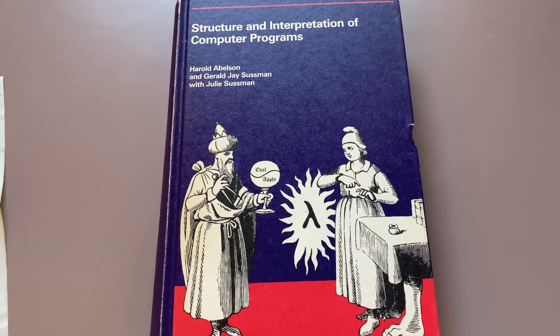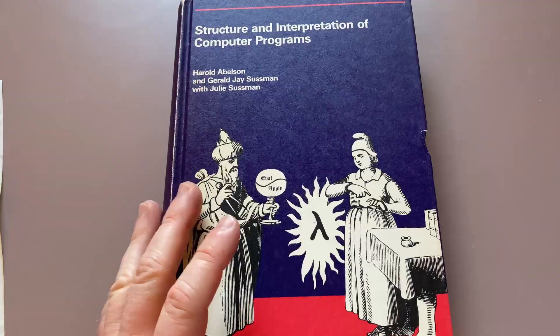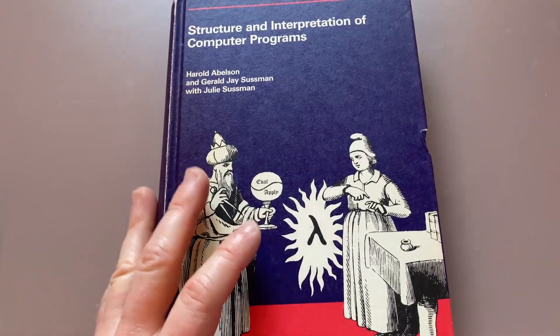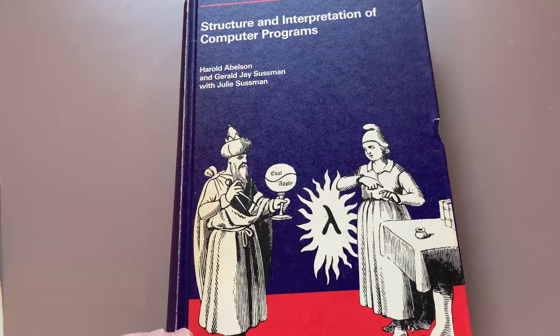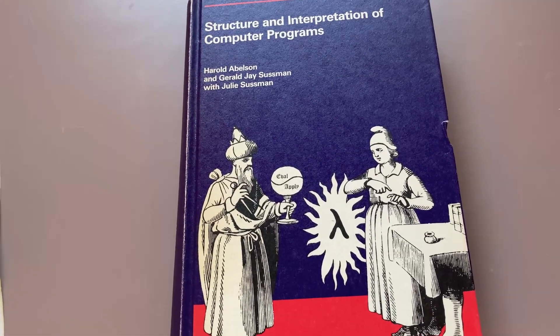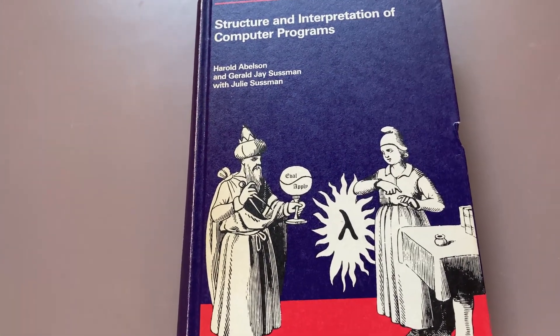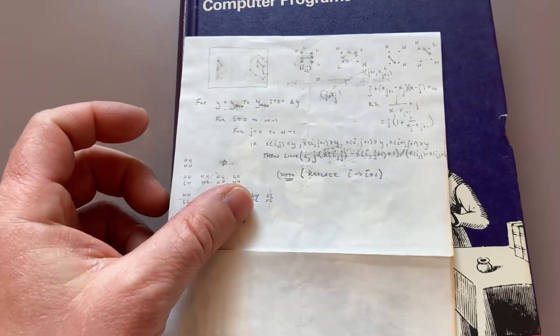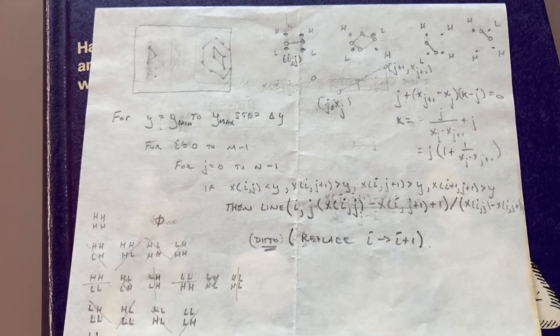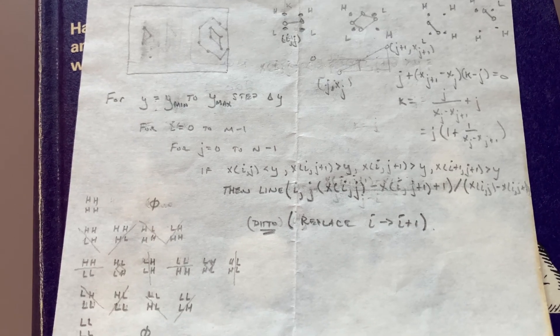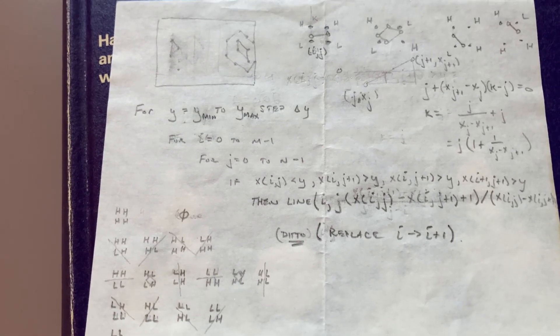The previous owner of my copy of this book actually signed this book and stamped it, but I purposely omitted it from this video because I wanted to respect his privacy. I'm pretty sure he's a computer scientist. But what I can show you is some of his notes. So I found this inside the book. You can see he took some notes here and look how small the writing is. Pretty cool.